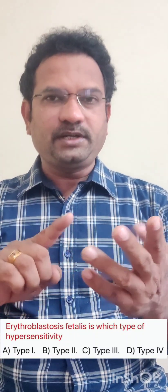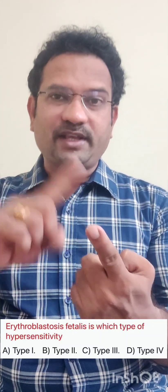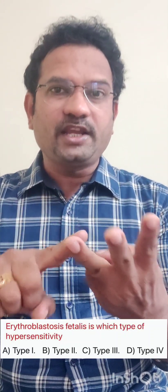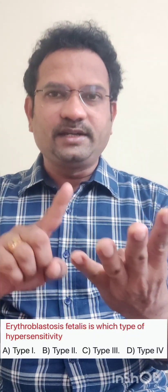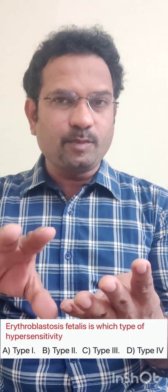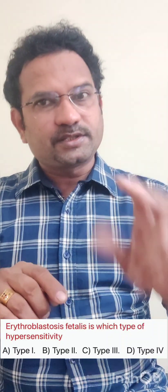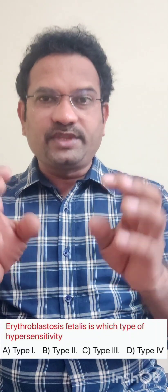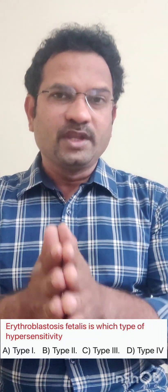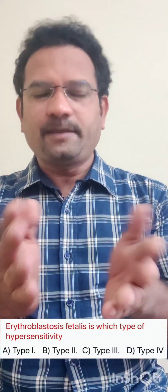There is a mnemonic for the types of hypersensitivity: ACID. Type 1 is A — allergy-induced, anaphylactic. Type 2 is C — cytotoxic. Type 3 is I — immunogenic or immune complex response. Type 4 is D — delayed hypersensitivity, also called cell-mediated. So the mnemonic ACID stands for type 1 through type 4. Since erythroblastosis fetalis is a cytotoxic kind of hypersensitivity, it belongs to type 2.